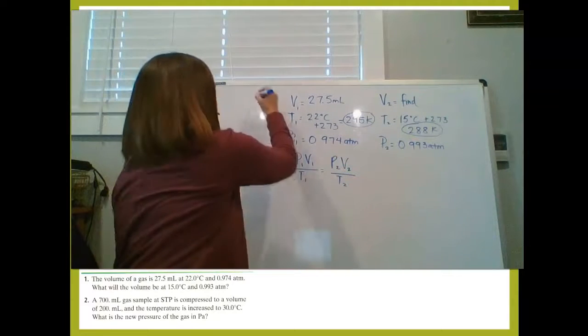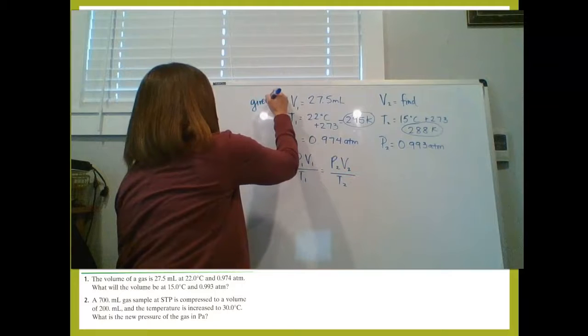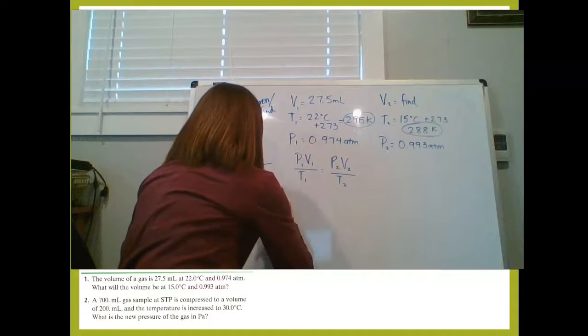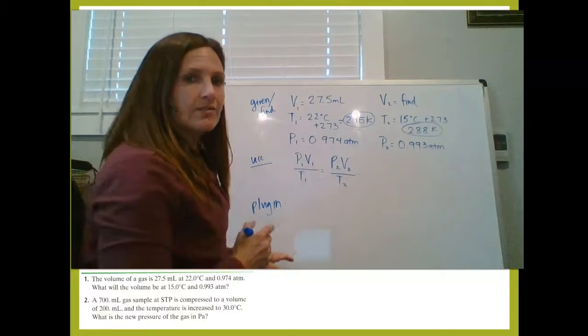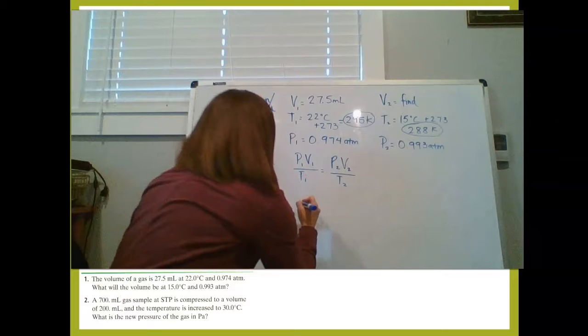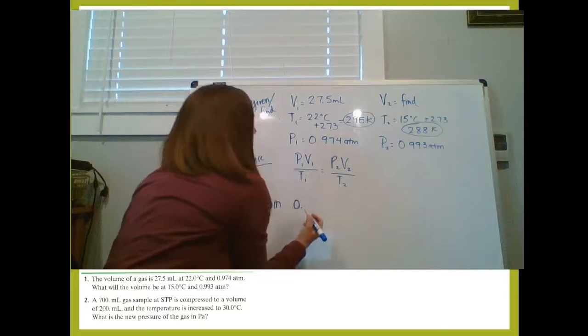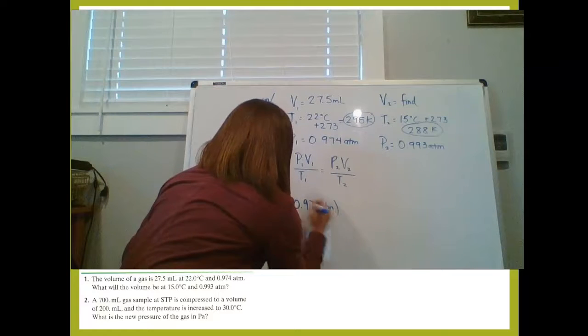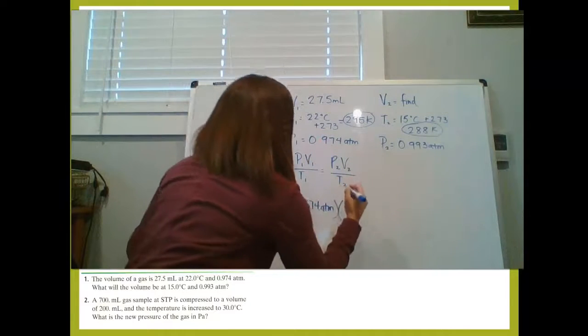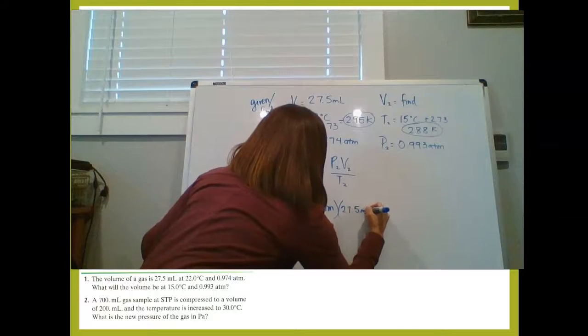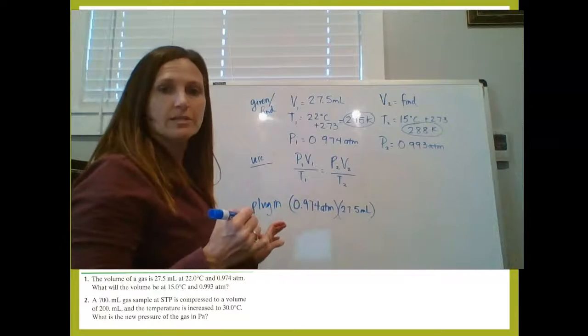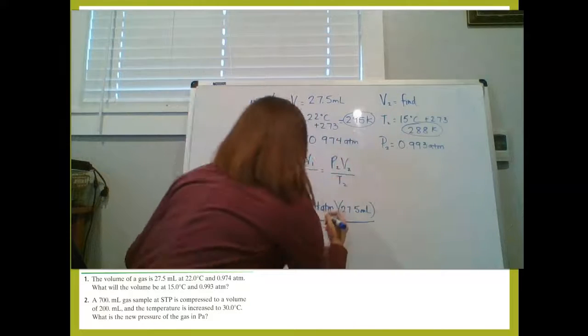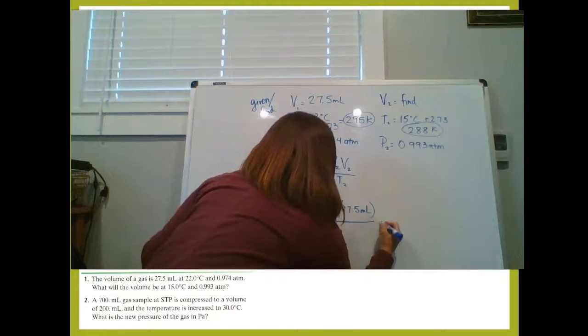And so what we're going to do is set into P1V1 over T1 equals P2V2 over T2. So this is my given and my find. Remember, we're going to use the five-step method. This is my use. Now we're going to plug in. What we get out of this is we're going to start with pressure 1, so 0.974 ATM times V1, 27.5 milliliters. Remember, any unit for volume is okay, so milliliters we can leave.